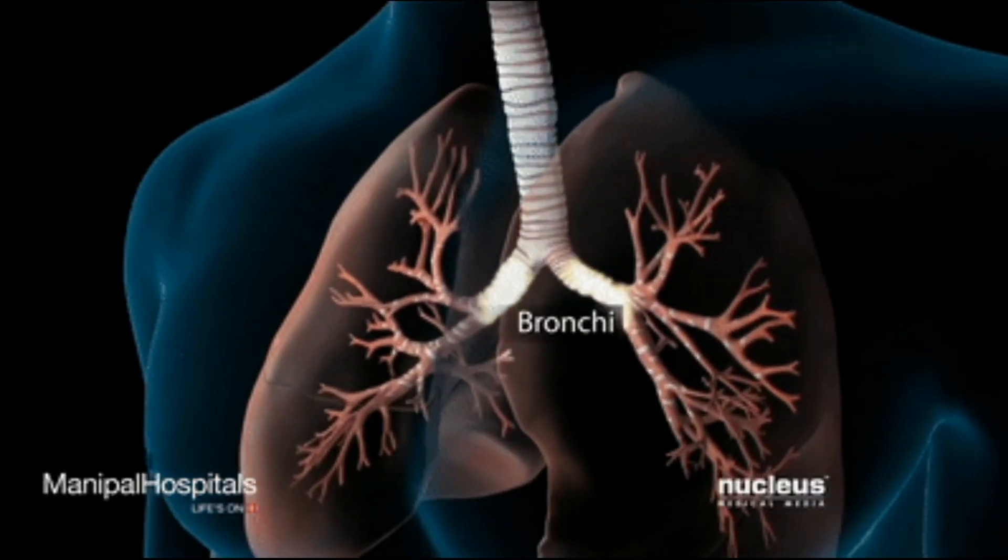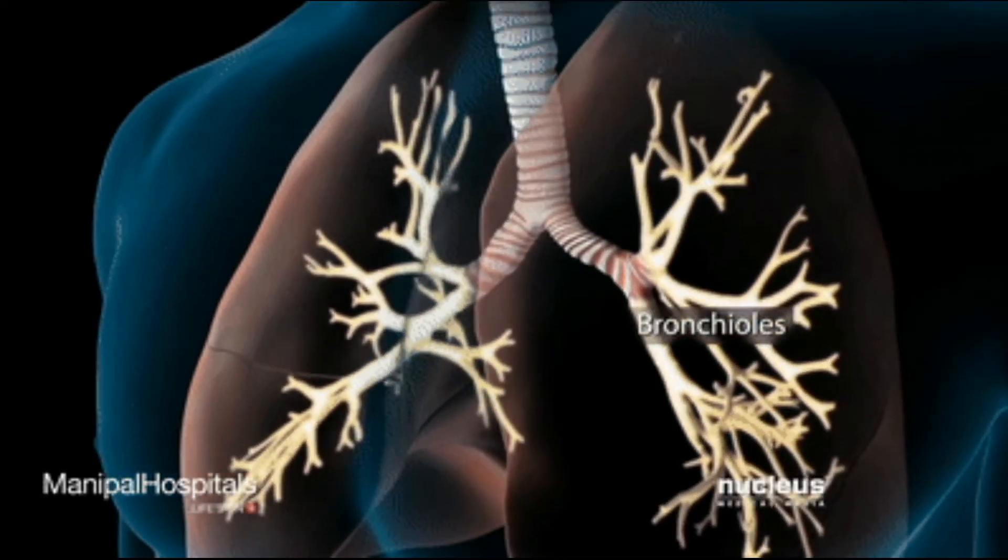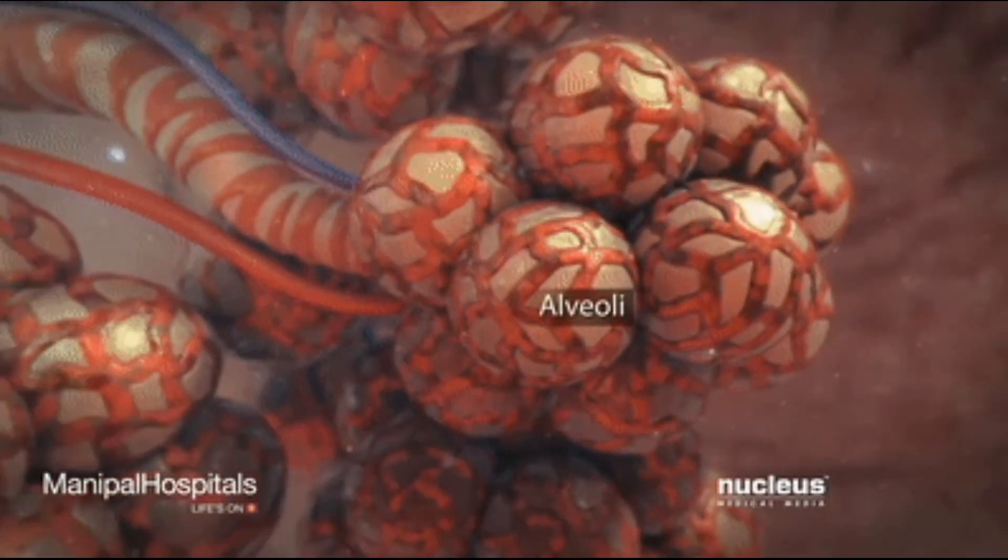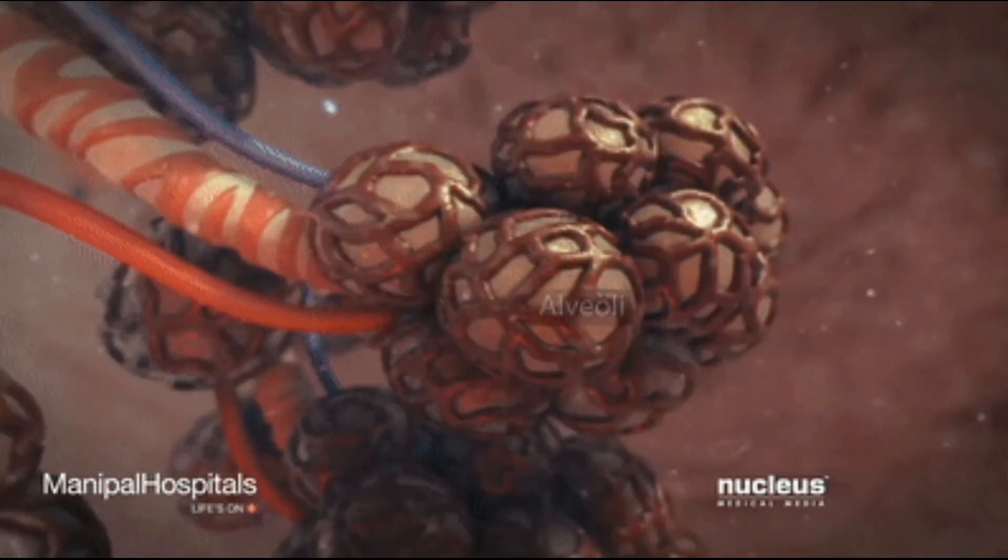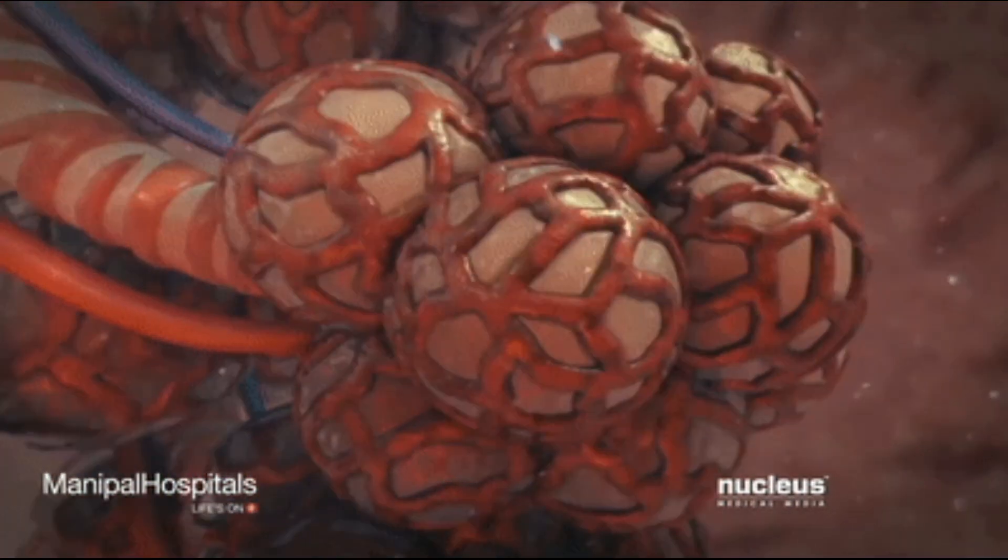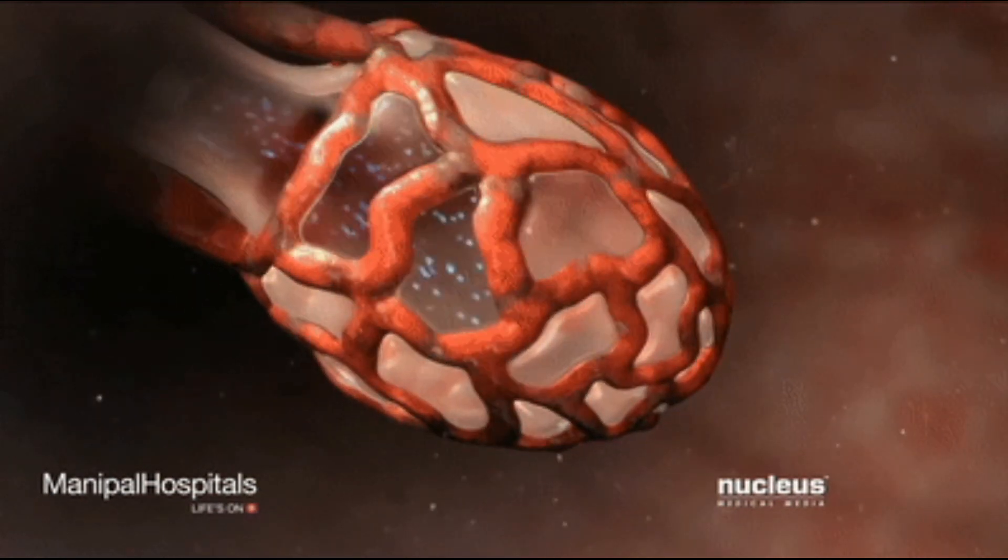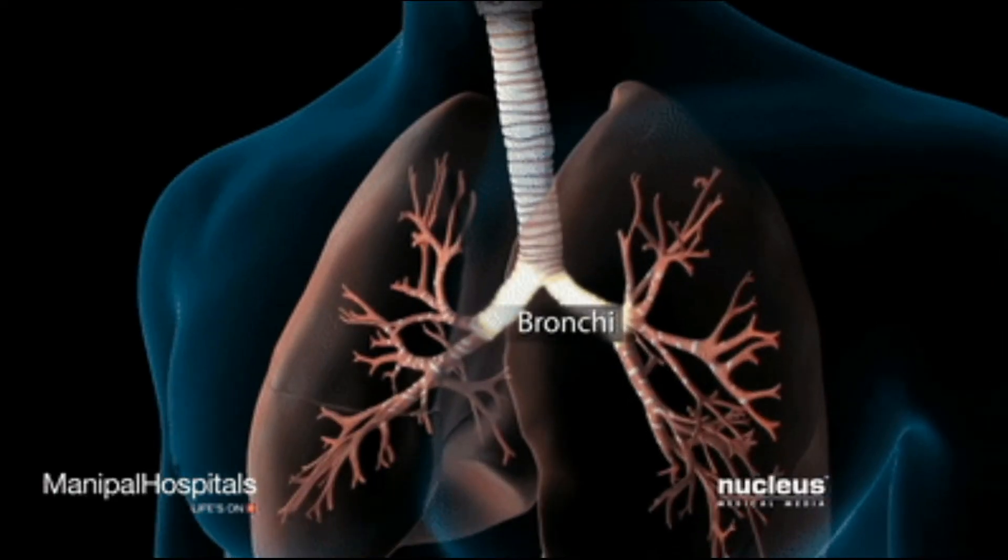They pass information to the brain's rhythmic centers, which then send appropriate nerve impulses to respiratory muscles, quickening or slowing down breathing as required.